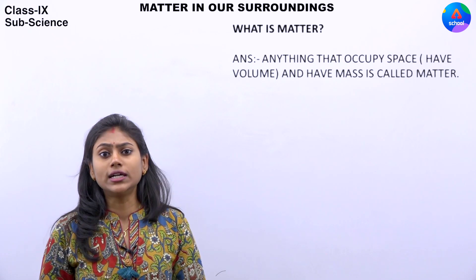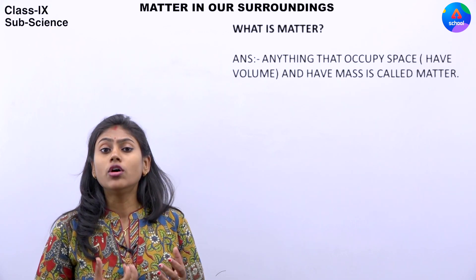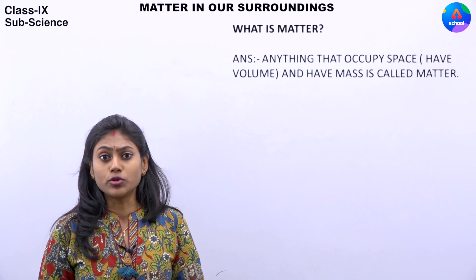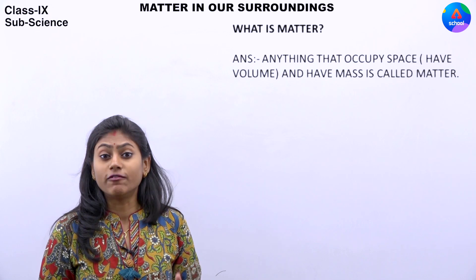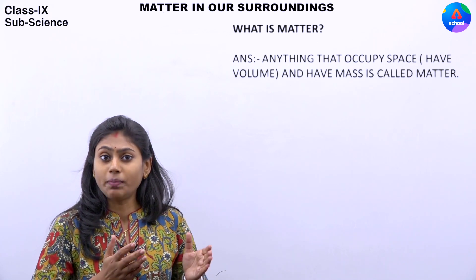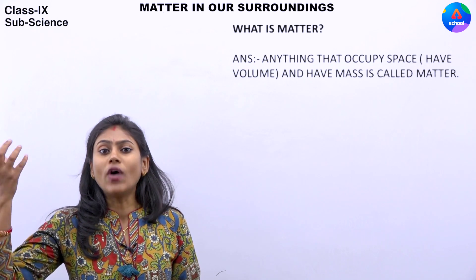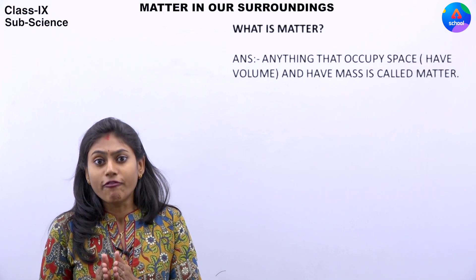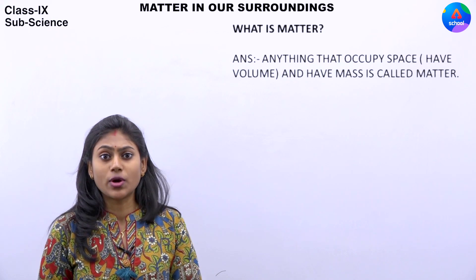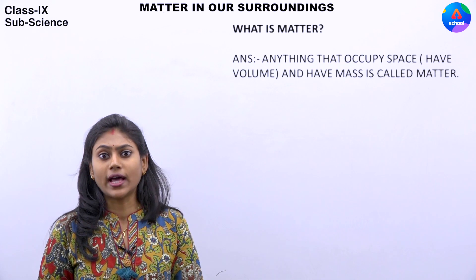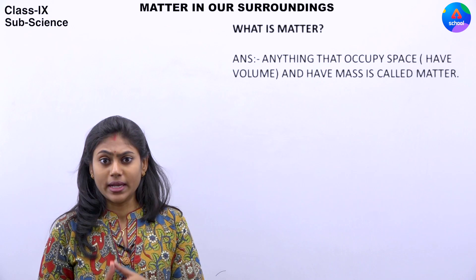Gravitational pull जो है वो अलग-अलग जगह अलग-अलग हो सकता है। Earth पे जो gravitational pull है वो ज़्यादा है अगर आप उसको moon के साथ compare करें। अगर किसी चीज़ का weight Earth पे 6 kg है तो moon पे वो 1 kg हो जाएगा। Weight differ करता है लेकिन mass constant रहता है।